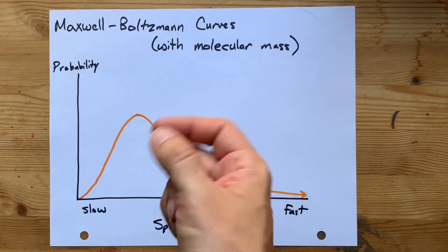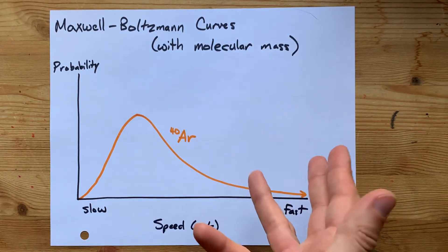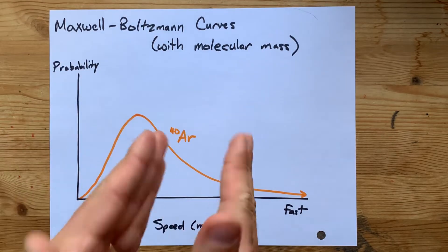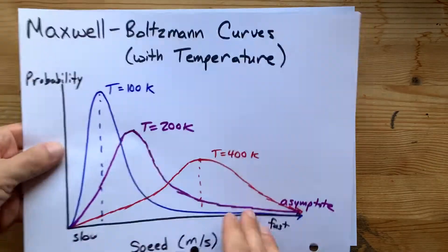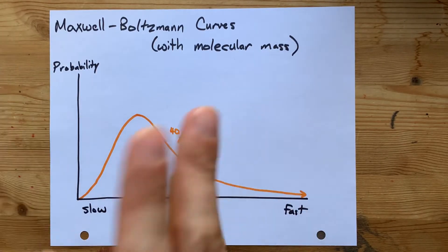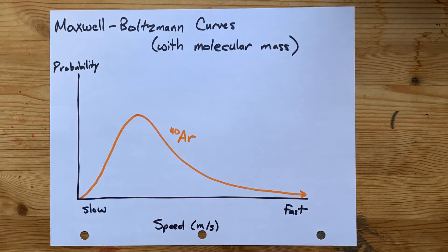How is a Maxwell-Boltzmann distribution controlled by the mass of a molecule or particle? Well, first, let's assume that we're keeping the temperature the same, because temperature plays its own role in changing these Maxwell-Boltzmann distributions. So let's say that we have some samples, and they're all the same temperature. Temperature is not a factor.